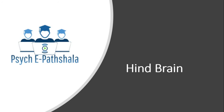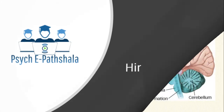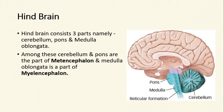In this video, we will be discussing about the hindbrain. Hindbrain consists of three parts namely cerebellum, pons and medulla oblongata. As you can see in the picture, the area colored in blue is the portion called hindbrain. Among these, cerebellum and pons are part of the metencephalon, and medulla oblongata is a part of the myelencephalon.